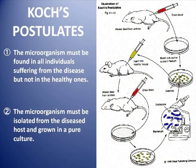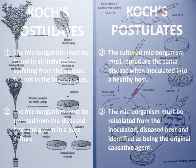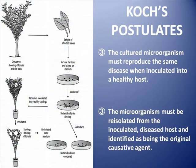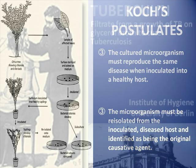In 1884, Robert Koch came up with a series of proofs that verified whether an organism was pathogenic and which disease it caused. Koch postulates allowed the discovery of over 20 other bacteria before 1900, and they are still used nowadays for many experiments.